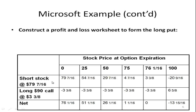You do each position separately. What's your payoff for your short position in the stock? Well, if the price goes to zero, you sold it at seventy-nine and seven-sixteenths, you buy it for zero, so you make seventy-nine and seven-sixteenths. If it falls to twenty-five, you sold it at seventy-nine and seven-sixteenths, you buy it for twenty-five, so you make fifty-four and seven-sixteenths. If the price goes to a hundred, you've sold it for seventy-nine and seven-sixteenths but have to buy it back at a much higher price, so you wind up losing twenty and nine-sixteenths.